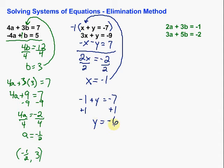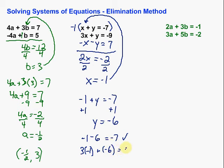Alright, so we've got our x and y. We can test this out and make sure it works by substituting back in — they should work in both equations. In the first one: negative 1 plus negative 6 equals negative 7. Sure is true. In the second one: 3 times negative 1 plus negative 6 equals negative 9. That's negative 3 plus negative 6, which is negative 9. Sure enough, it works. So the ordered pair for our solution is (negative 1, negative 6).